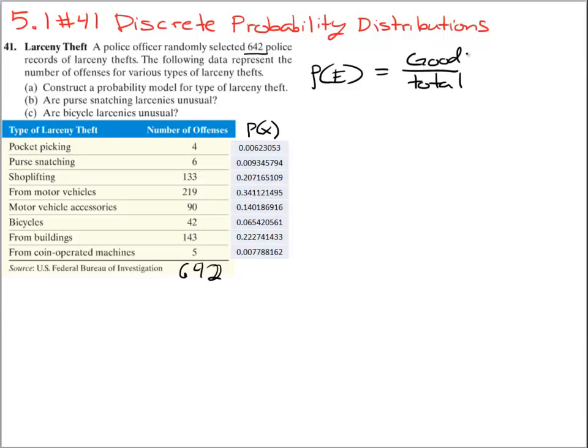Where good just means the number of ways that something can happen that is being described here, and total is total. If we are looking for the probability of pocket picking, we are just looking at the number of thefts that are pocket picking divided by total number of thefts, and so on. So this first number here is just 4 over 642.